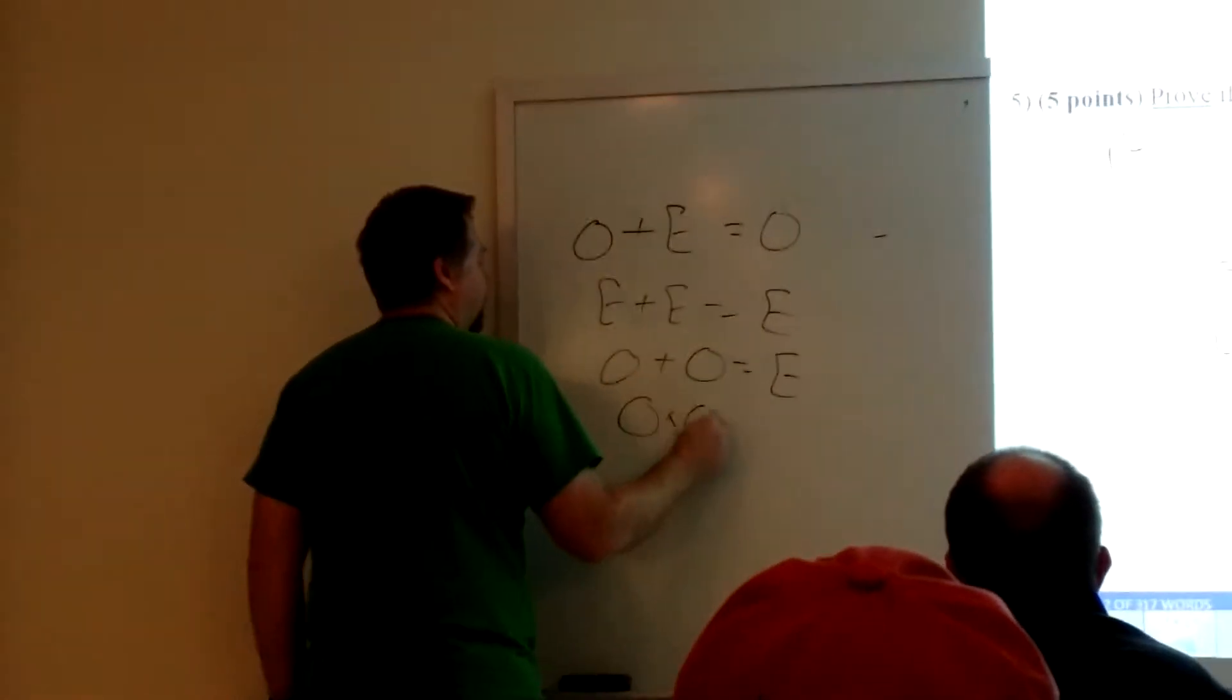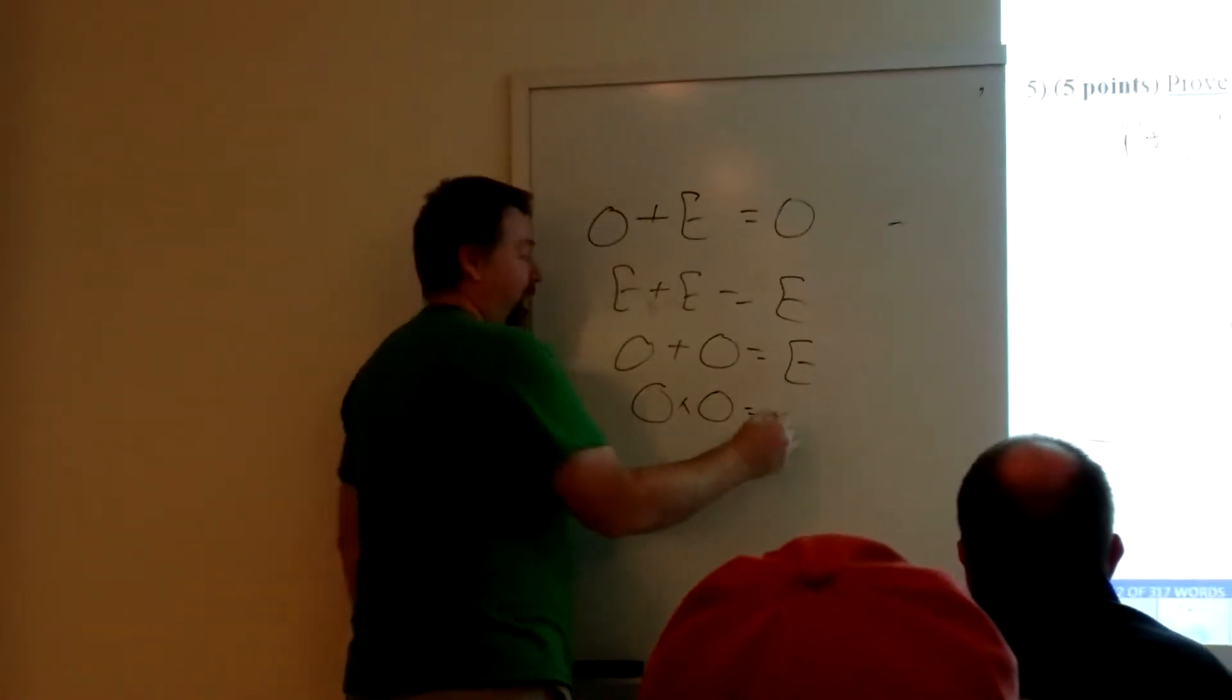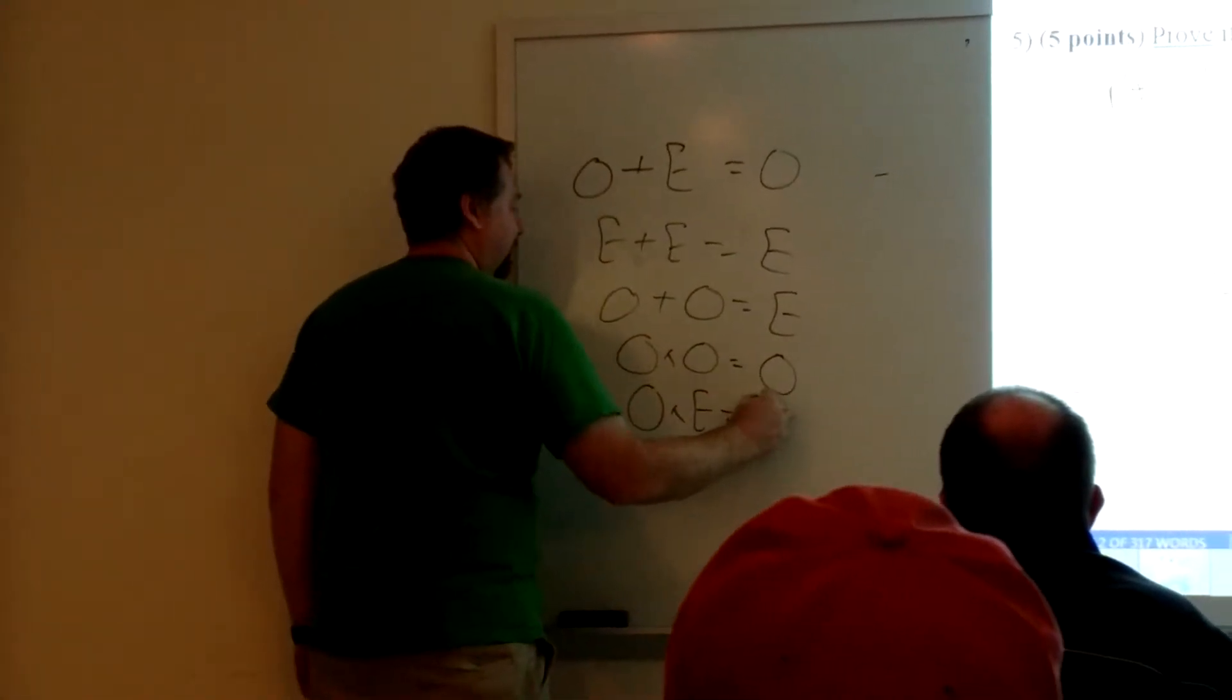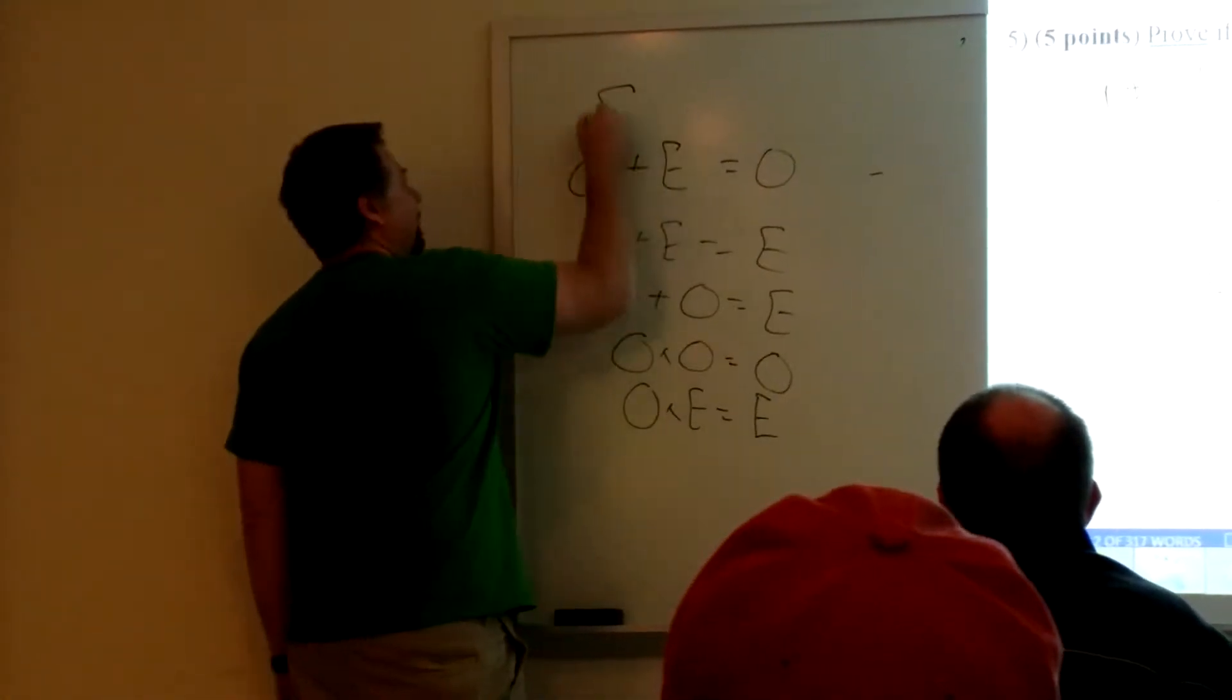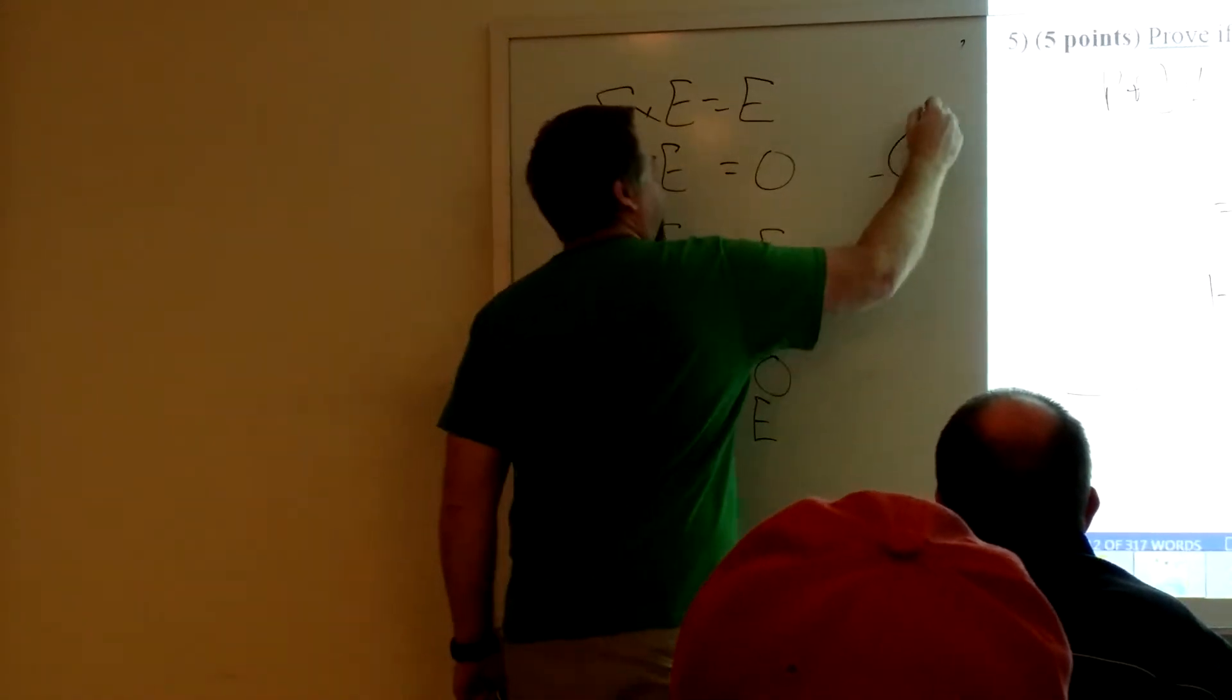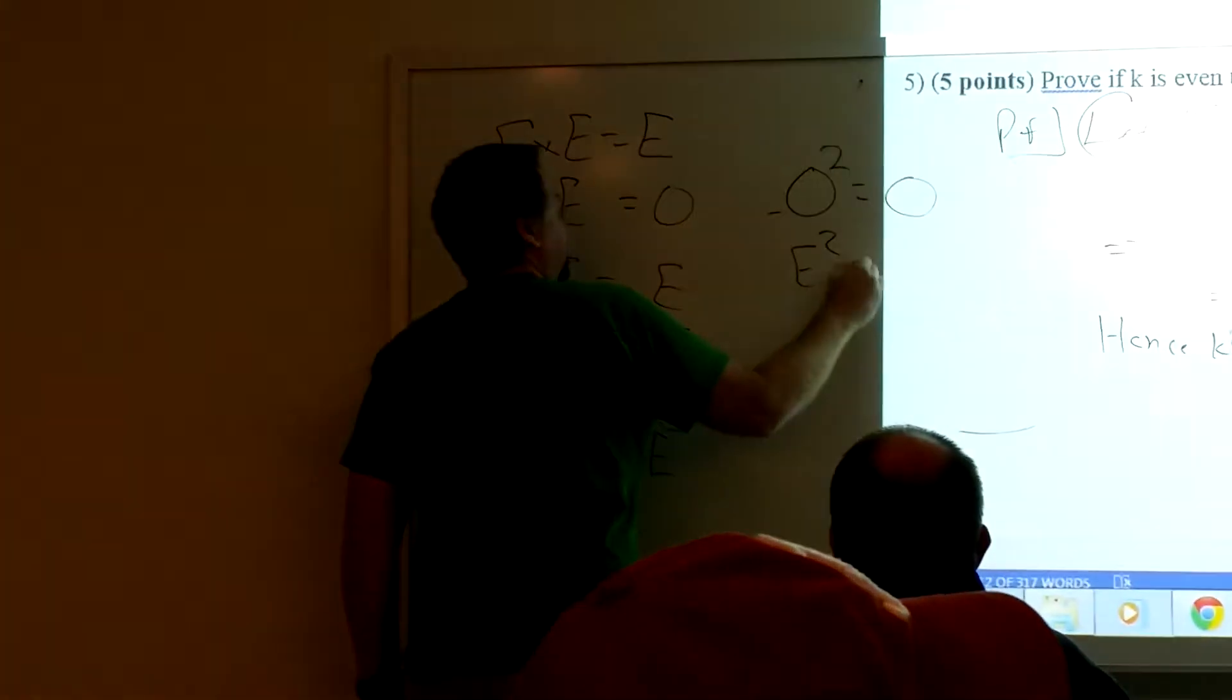What's an odd times an odd? Even. Odd times an even? Even. Even times an even? Even. An odd squared? Odd. Even squared? Even. So I mean, I could, you can do that all day long. What's an odd plus an odd plus an odd? Odd. Odd plus an odd is even, right? Plus an odd is odd.